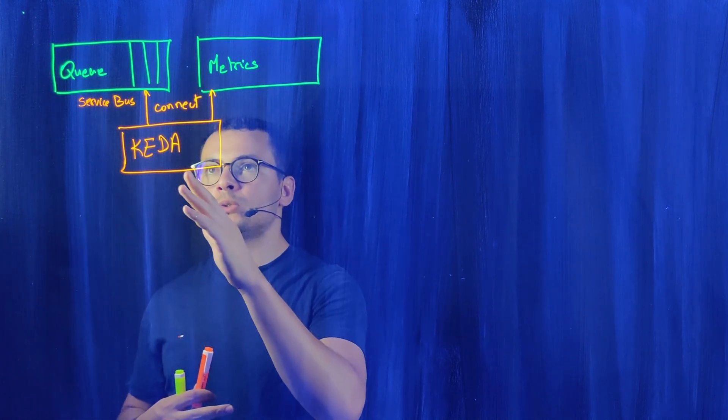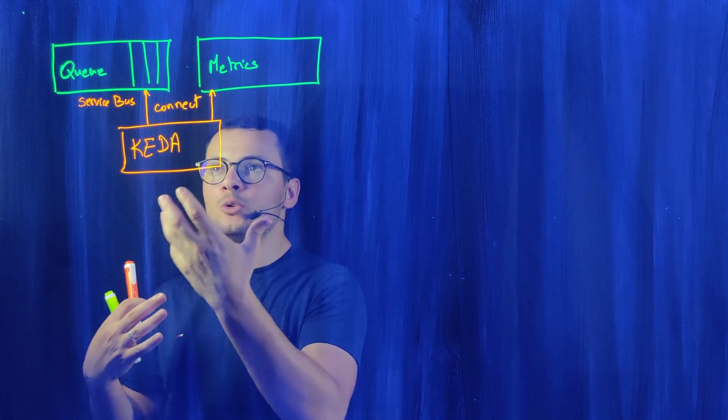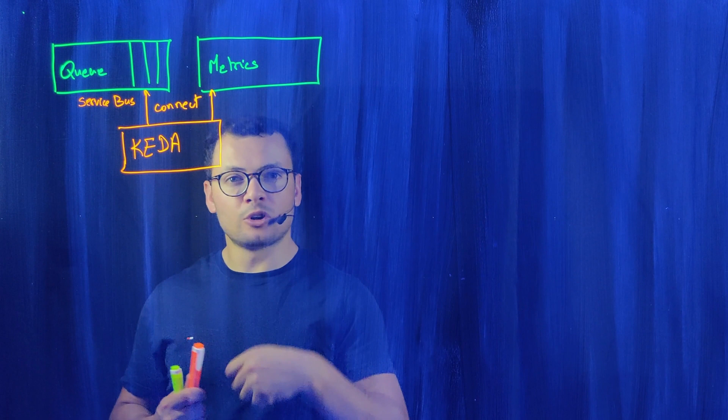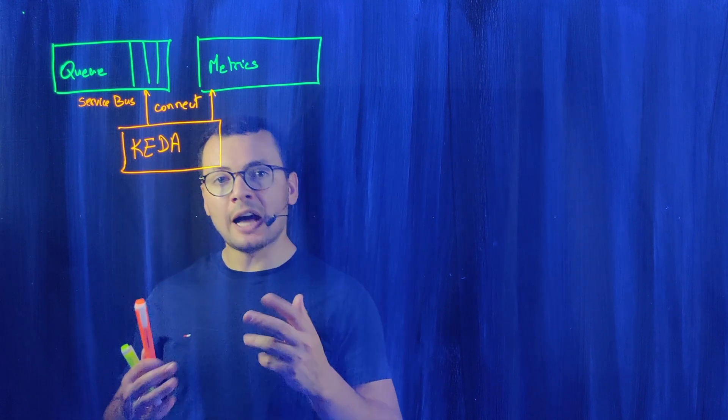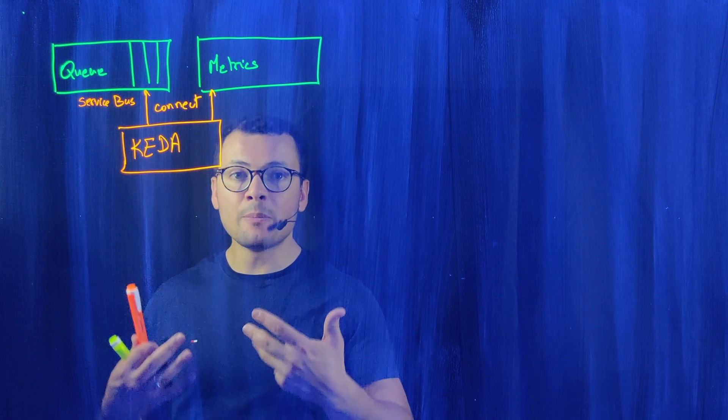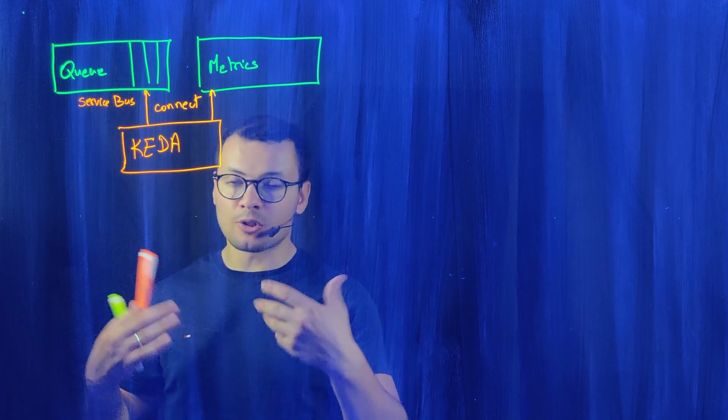Let's say I want to create a new job or a new pod each time I have a new message, in order to process that message. For that, KEDA will act on my deployments, on the number of replicas for the pods or for the container app or for the jobs.